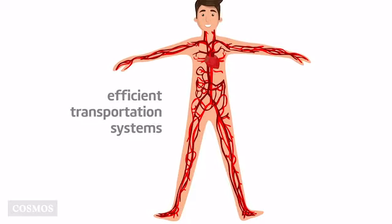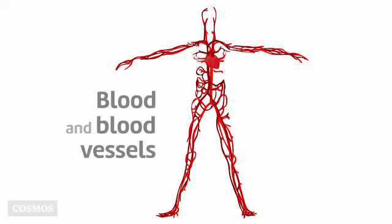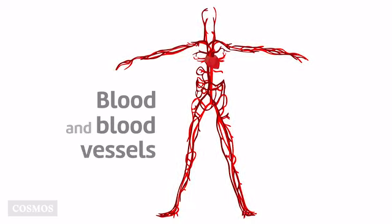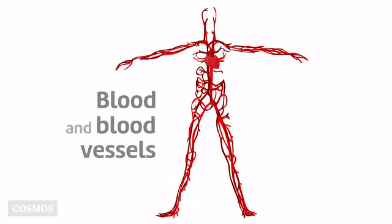Complex, multicellular organisms like humans need efficient transportation systems to keep all their parts healthy. Our blood and the vessels it flows through are vital to keeping us alive.